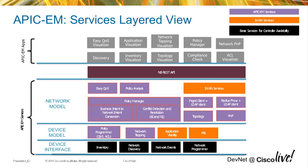Some of the services built into the controller include the policy programmer service, which handles QoS and access control lists, services around topology inventory, and policy visualization or analysis. Once you have an understanding of the network and its configuration, you can get insight into how policy or access control lists have been implemented across the network as a whole.